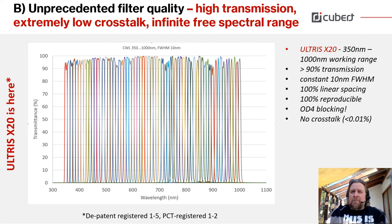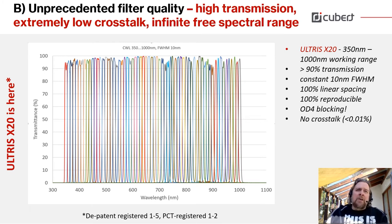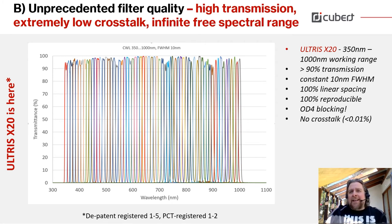The second advantage is unprecedented filter quality. When we first got the measurement of the real spectral response curves of our filter quality, we were quite stunned. We have a wavelength range from 350 nanometer to 1000 nanometer, completely continuous, with 90 percent transmission over all channels and a constant 10 nanometer full-width half-maximum. That's the kind of system I always wanted to have. And to top everything off, there's a blocking in each filter of OD4, so we have nearly no crosstalk.